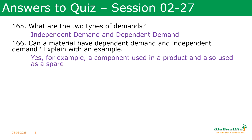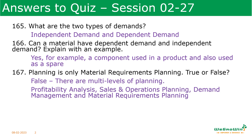For example, take the tire of a car. When it is sold as a spare it is independent demand, but when it is used in producing a car it is called dependent demand. Is planning only material requirement planning? No — there are multiple levels of planning: profitability analysis, sales and operations planning, demand management, and material requirements planning. These multiple levels of planning must communicate with each other, with feedback going top to bottom and bottom to top.